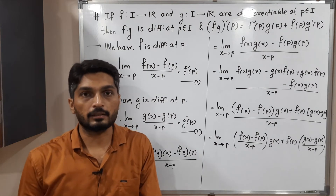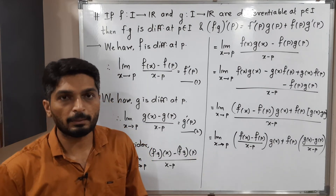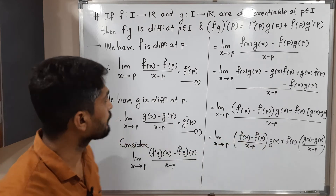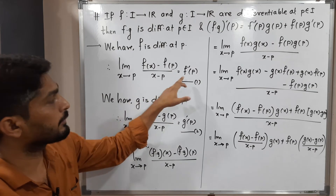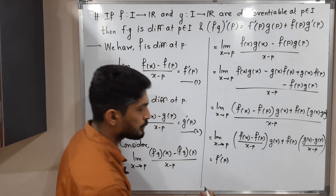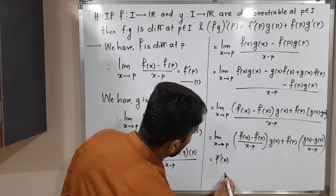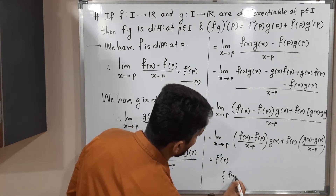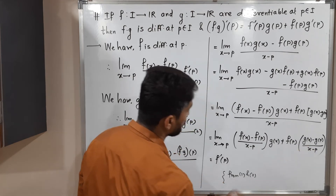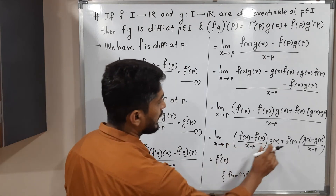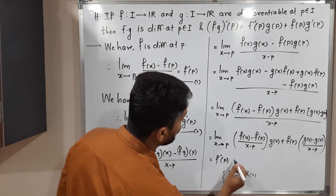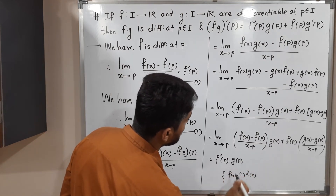In the limit topic we have seen that when we have such a case, we can apply separate limits to each term. Applying the limit to the first bracket, from equation one its value is f dash of p. So we have f dash of p times the limit of g(x).